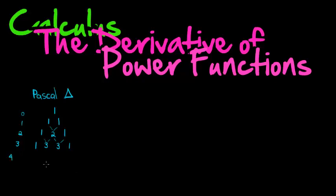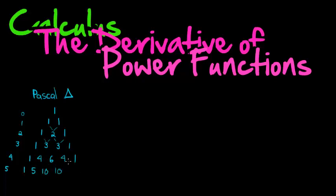In line 4: 1, then 1+3=4, then 3+3=6, then 3+1=4, then 1. And in line 5 we have: 1, 5, 10, 10, 5, 1.